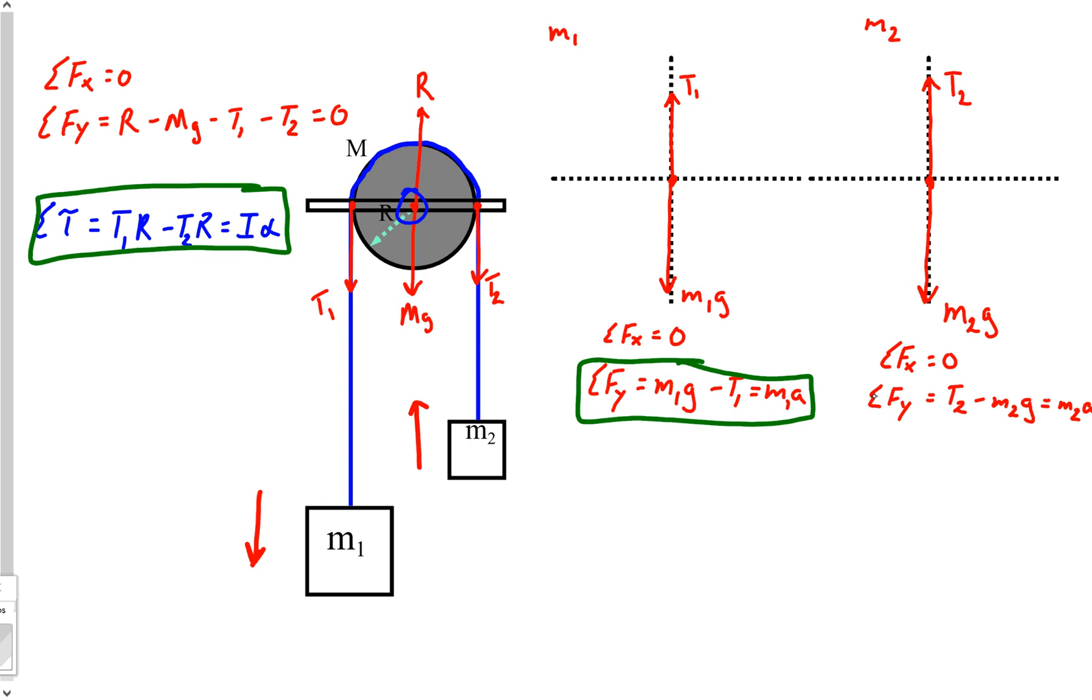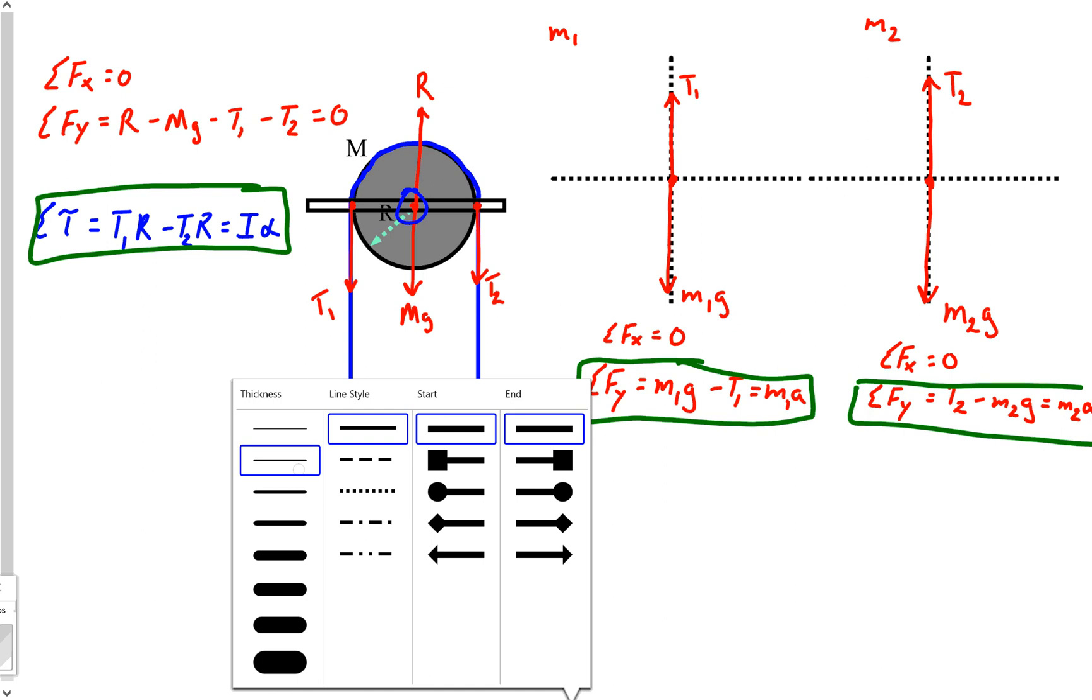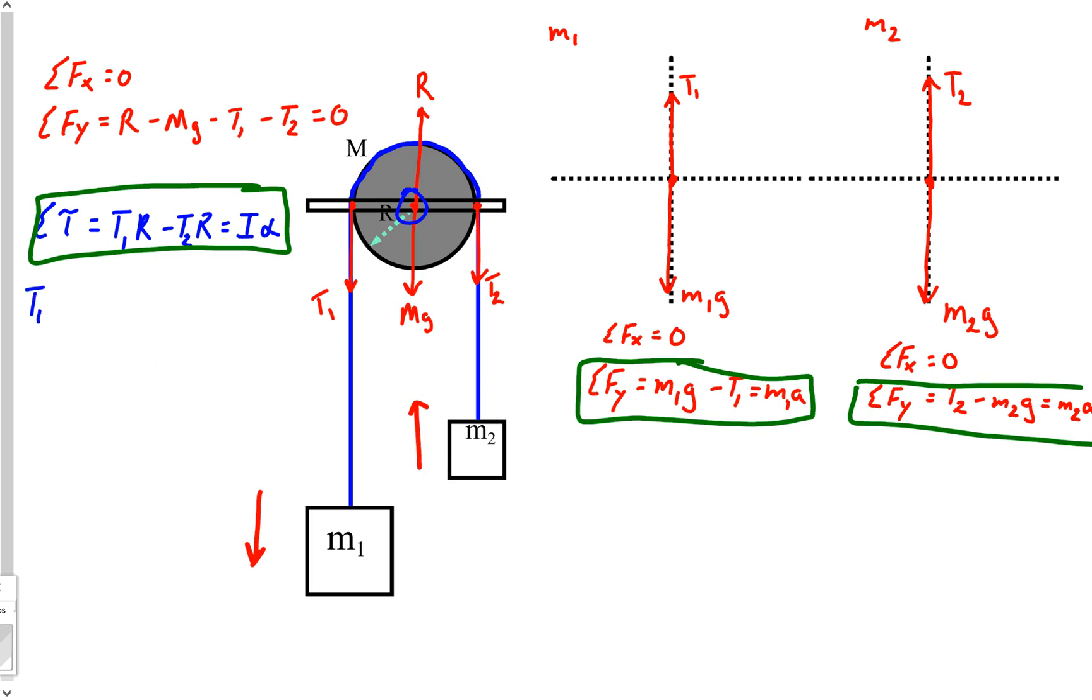Now here's the thing, that is equal to I alpha. The physics in this problem is really over because what we've got at this point, these are the equations that we need to solve for acceleration. So let's go ahead. T1R minus T2R is equal to, it's a solid cylinder, so one half M R squared. And then in place of alpha, if you remember from the last video, that is a over R. So if you actually take a look, R cancel square, all the Rs have cancelled out.